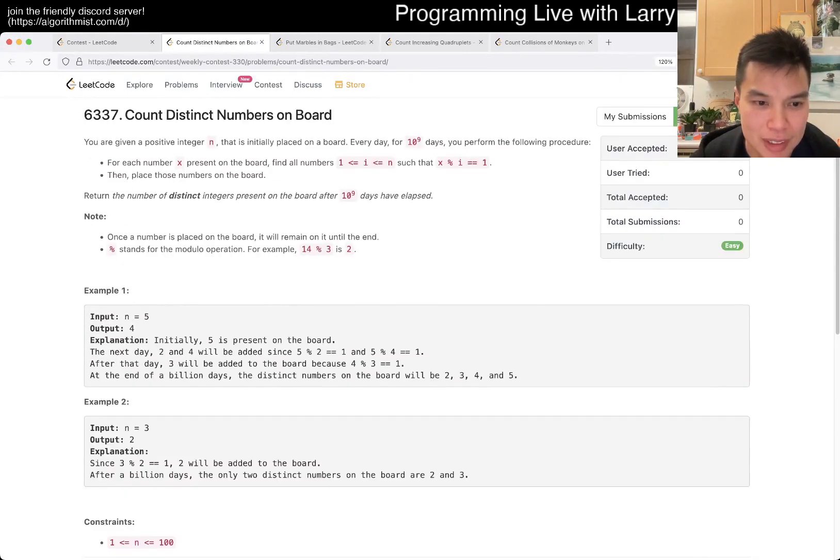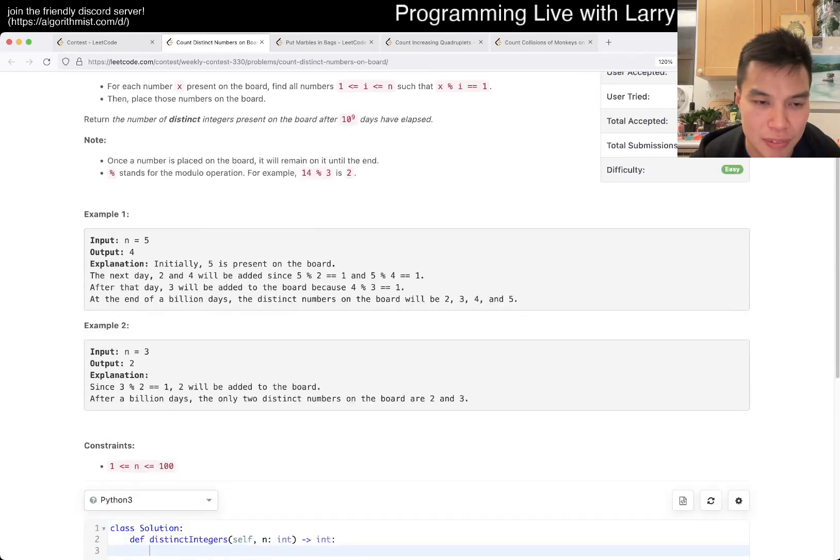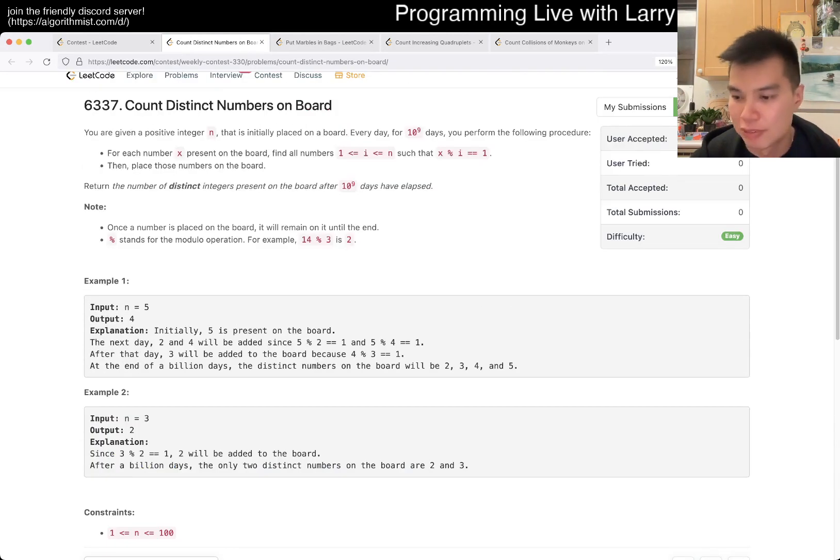So, 3... Okay, what if it's even? If it's 4. If it's 4, then... Then 3, and then 3 will get all the numbers, right?